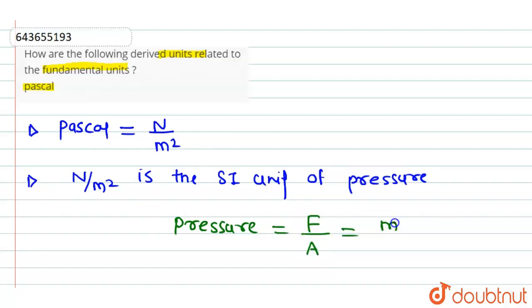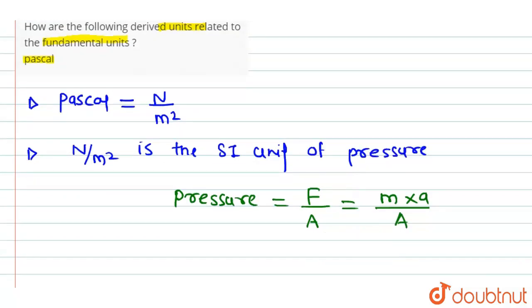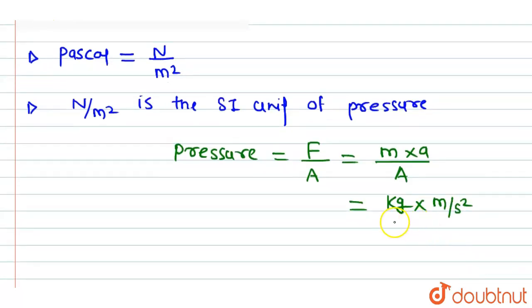Now, force is equivalent to mass multiplied by acceleration divided by area. Now, putting respective units here, the unit of mass is kg, the unit of acceleration is meter per second square, and the SI unit of area is meter square.